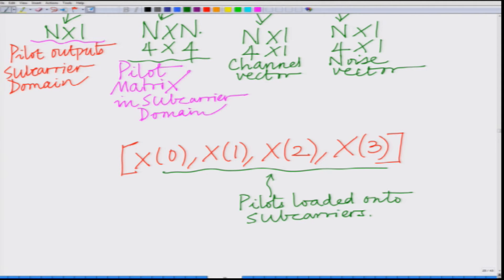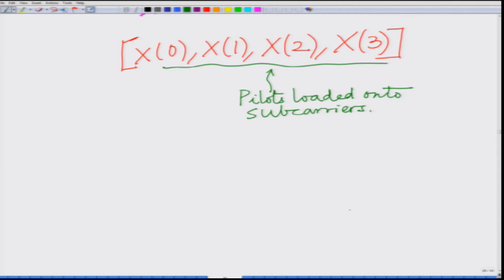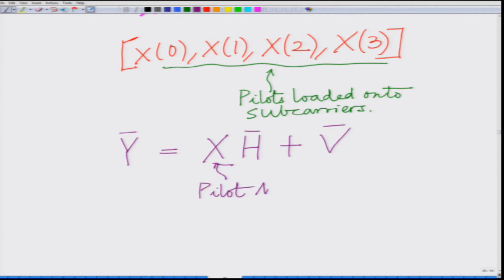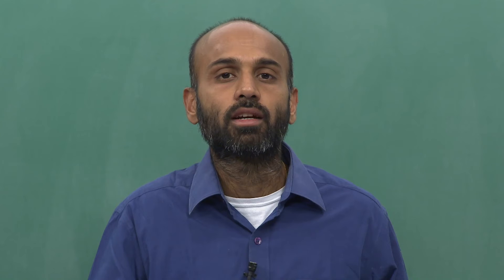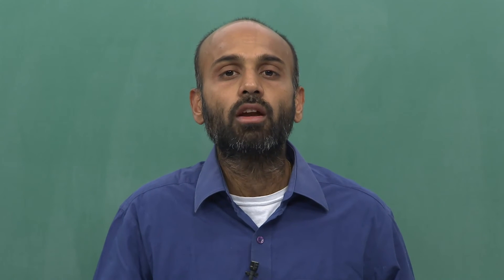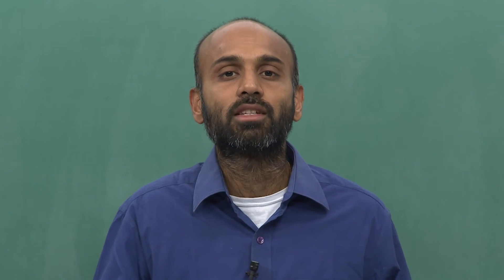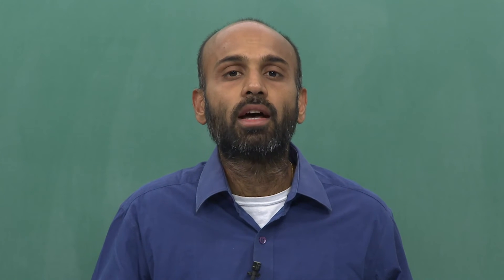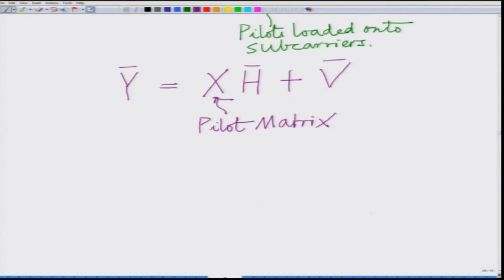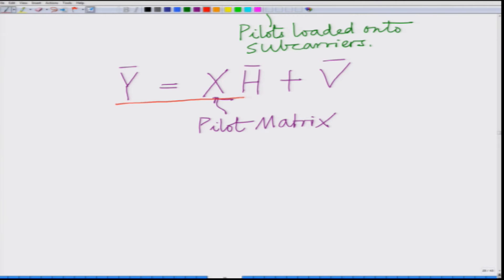These are the pilots loaded onto the subcarriers, and therefore what I have is the familiar Y equals X H_bar plus V_bar, where X is the pilot matrix. This is something we have seen before, even in downlink channel estimation: received vector Y equals pilot matrix X times channel vector H plus noise vector. Therefore, one can formulate the channel estimation problem — estimation of coefficient vector H_bar — as a least squares problem.